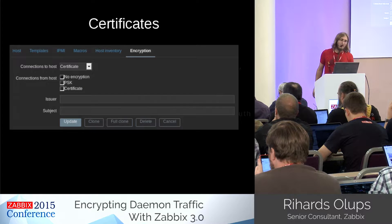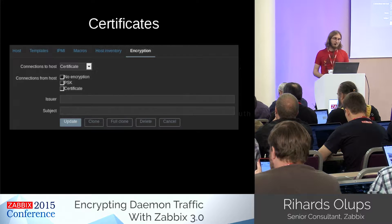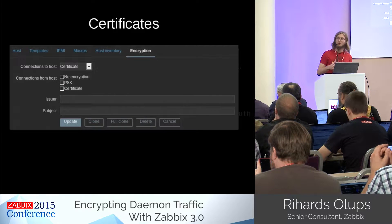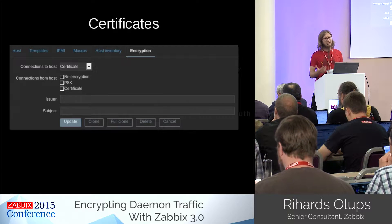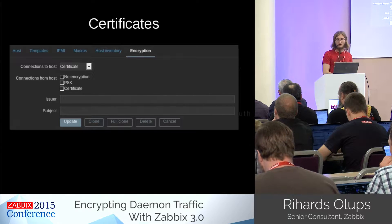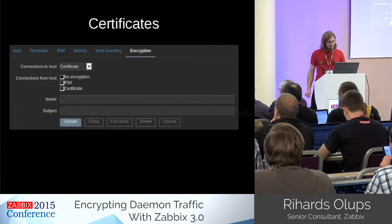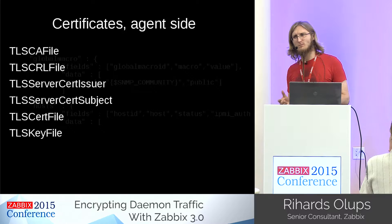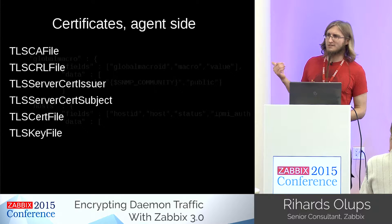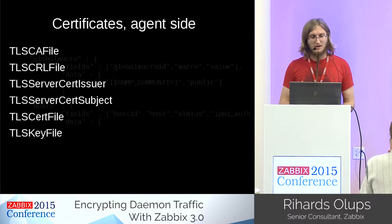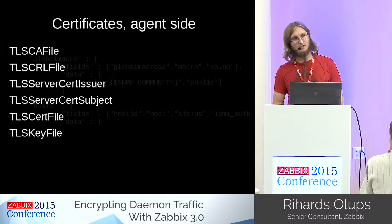If you're interested in certificate-based encryption, it's slightly more complicated. In the host properties you choose certificate as the connection method, and you can verify the issuer and subject on the certificate at the other end — useful if you have multiple CAs installed. There are more parameters in the agent daemon configuration file for certificates than for PSK, but for those who have worked with certificates they should be obvious.